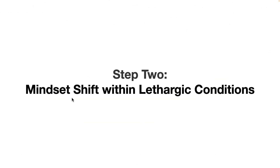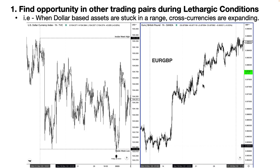Step two: the mindset shift within lethargic conditions. When it comes to lethargic conditions, we must have a different approach to trading. The easiest thing to do if you don't like trading consolidations is to find opportunity in other trading pairs. If you know how correlated markets work, once one market is stuck in consolidation, the other market is allowed to move. Portfolio shifting means money enters one market and is withdrawn for another, allowing price to consolidate in one while another moves.